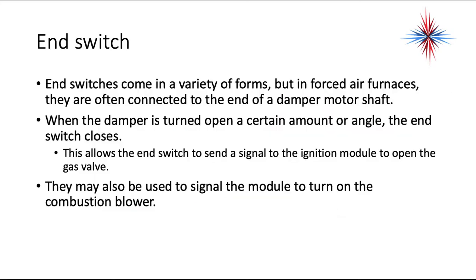The end switch comes in a variety of forms, but in forced air furnaces they're often connected to the end of a damper motor shaft. When the dampers open or turn to a certain angle, the end switch closes. This allows the end switch to send a signal to the ignition module to open the gas valve, and it may also be used to signal the module to turn on the combustion blower.